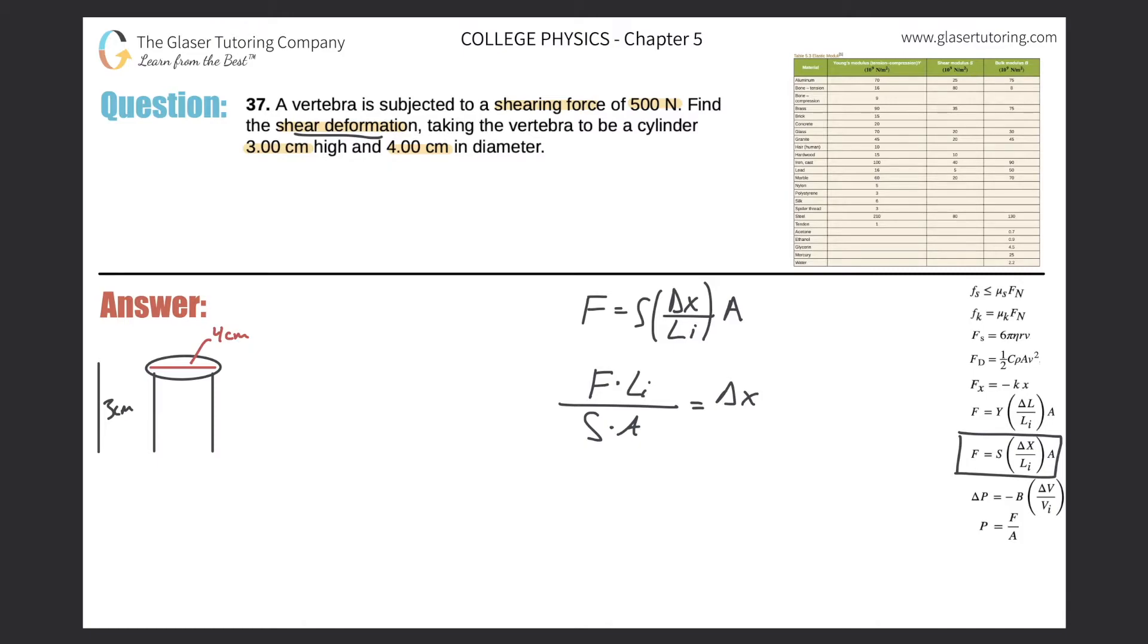All right, so in order to find the values, we need to know all four of these values. And if I know all four, then I'll know the shear deformation. So what's the force? Well, they told us, 500 newtons. So this is 500 newtons. Great.